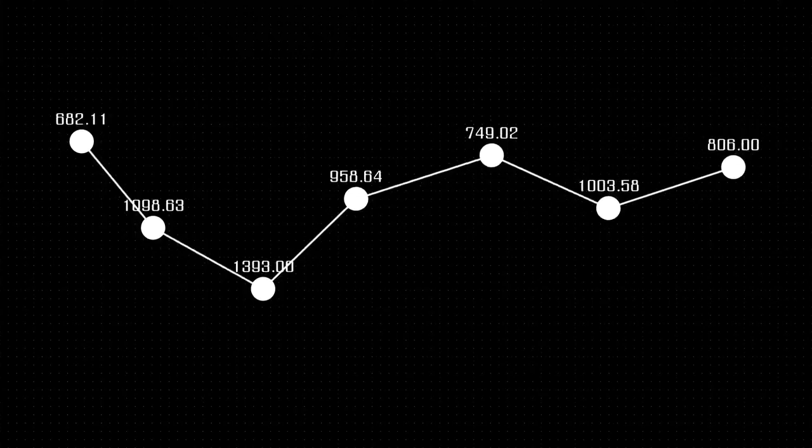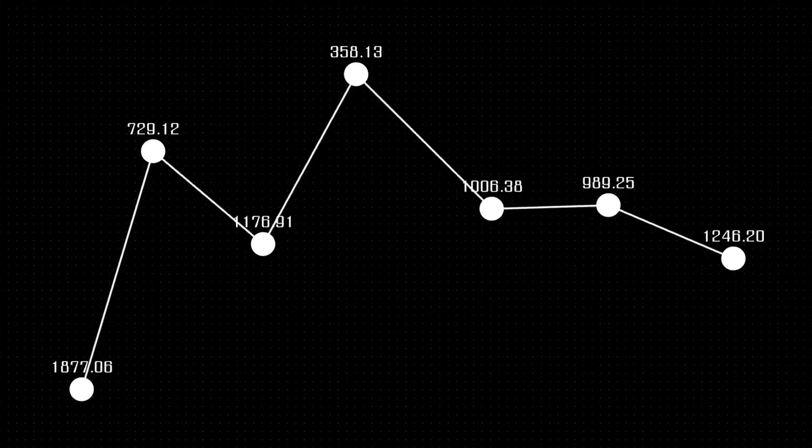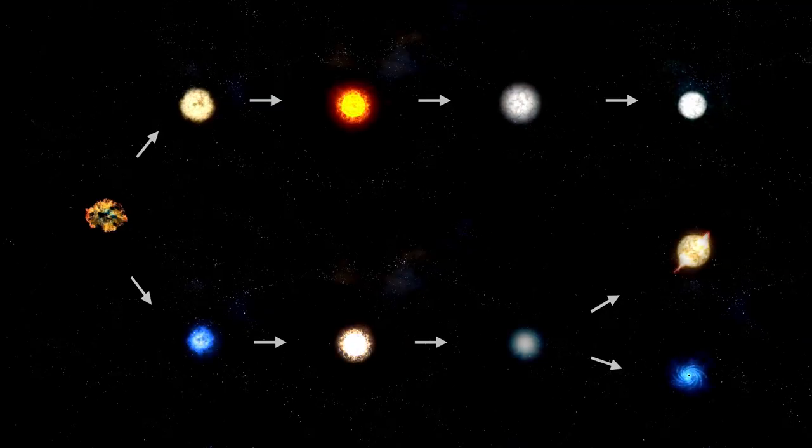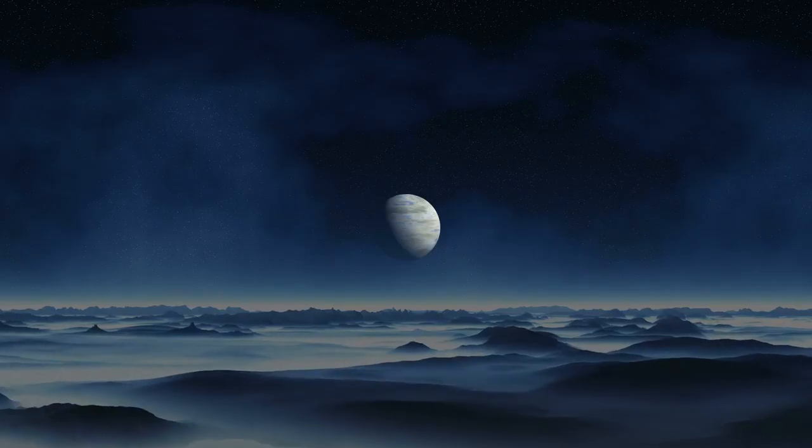Betelgeuse's magnetic field is believed to be thousands of times stronger than that of the sun. This intense magnetic field causes the gas on the surface of the star to be trapped in loops or arcs, describing regions of intense magnetic activity that are visible as star spots.